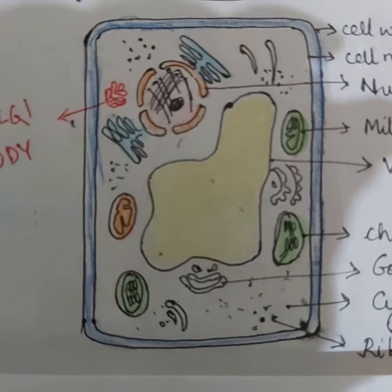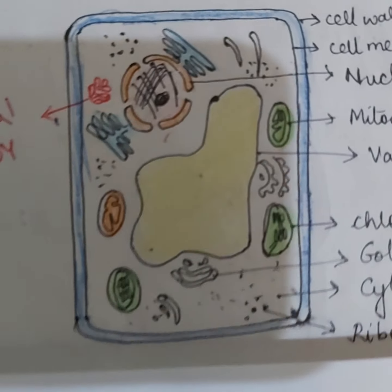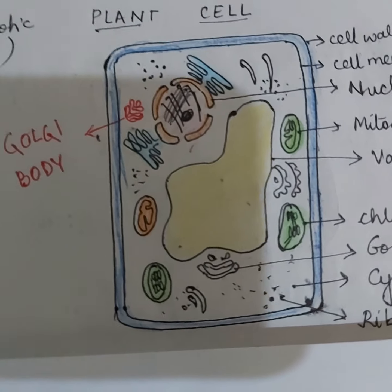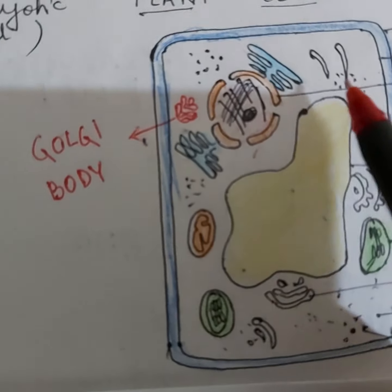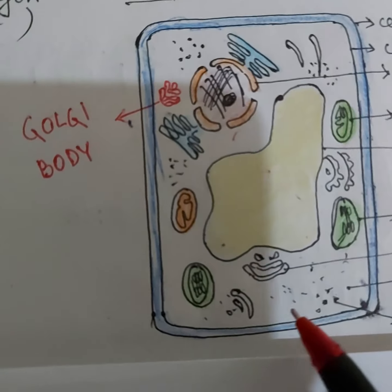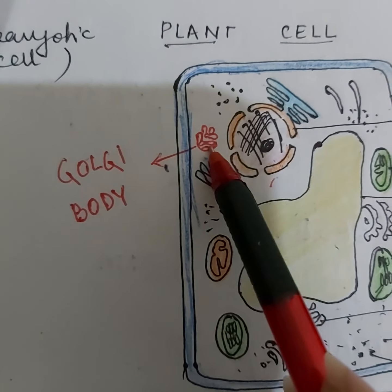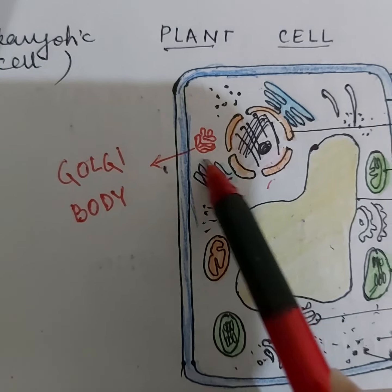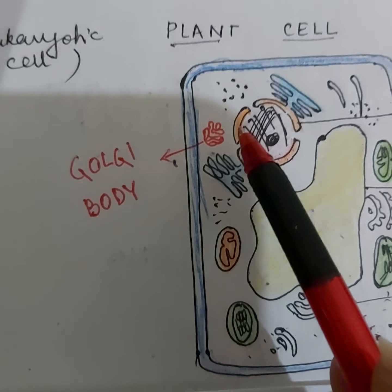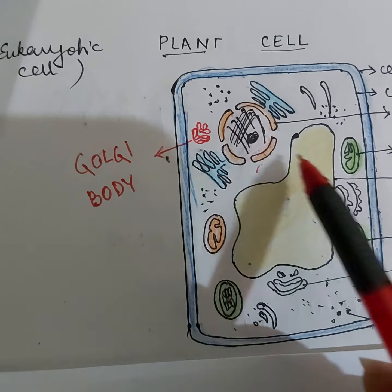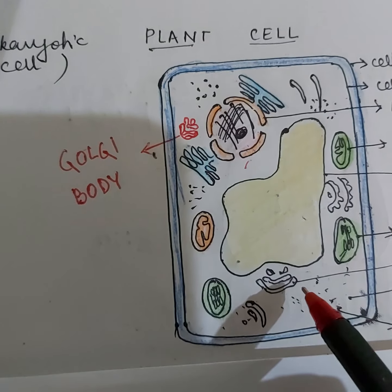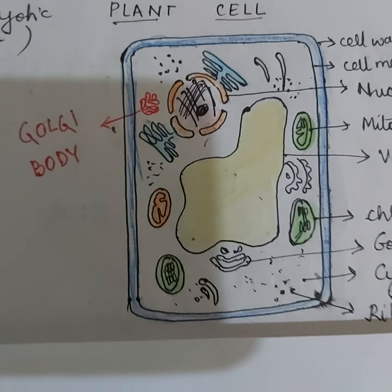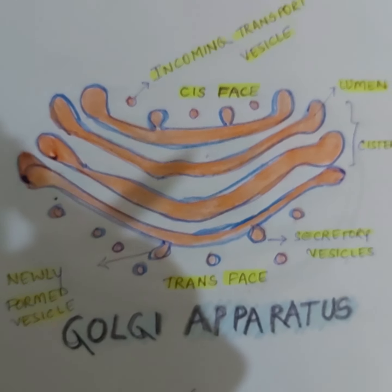Children, have a look at the eukaryotic cell, which is characterized by possessing membrane-bound organelles that are subunits having different functions. Today we will learn about the Golgi body. In the eukaryotic cell, Golgi bodies are generally found near the membranes of the rough endoplasmic reticulum and the nucleus, and also scattered in the cytoplasm. In plant cells there are many tiny subunits called dictyosomes.